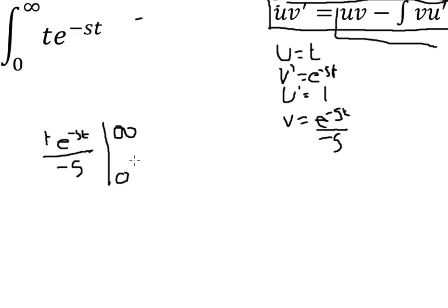And then minus the integral of v. We will do minus there so we can turn that into a plus. 1 over s and then e to the minus st.